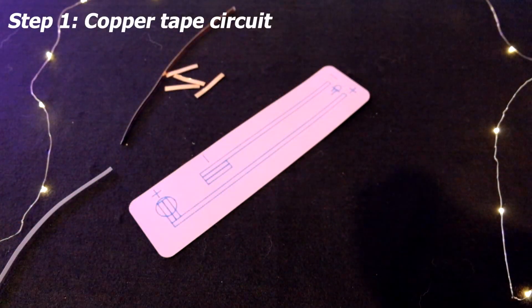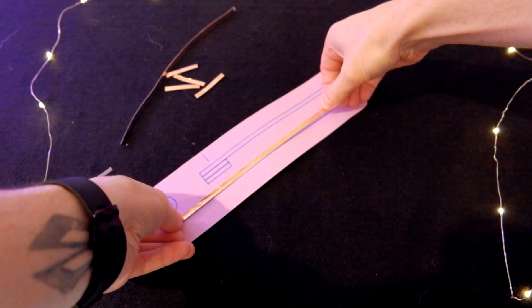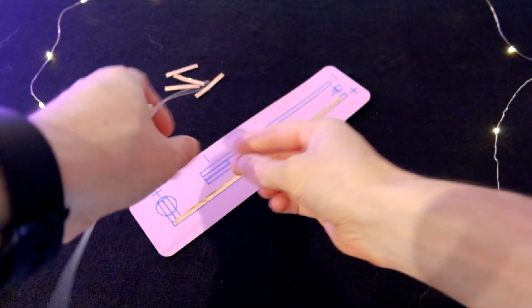First, we're going to create a circuit using adhesive copper tape. Firmly stick the copper tape down inside the pre-drawn boxes.